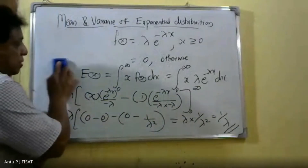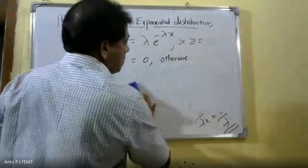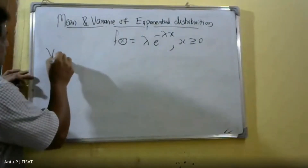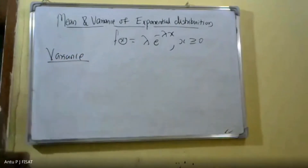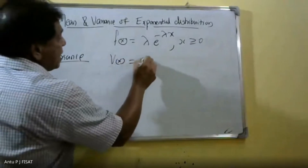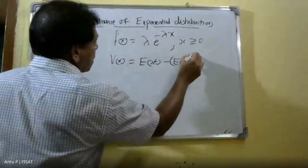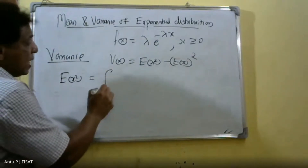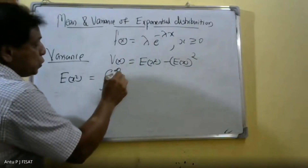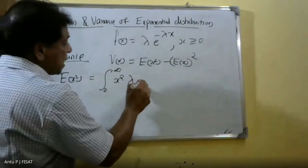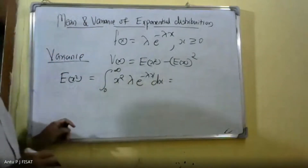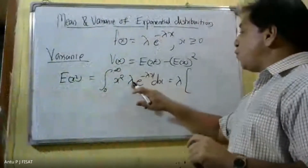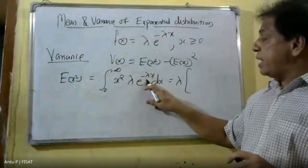Next, we find the variance. Variance equals E[X²] − (E[X])². To find E[X²]: it equals the integral from 0 to infinity of x²·f(x) dx = integral from 0 to infinity of x²·λ·e^(−λx) dx. We take λ outside. Applying integration by parts: x² is taken as the first function and e^(−λx) as the second function.